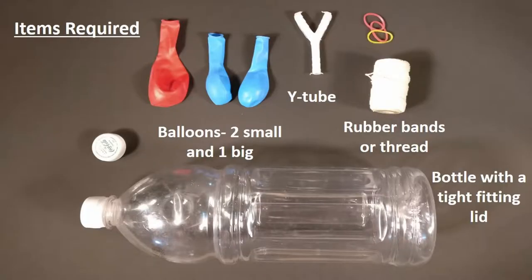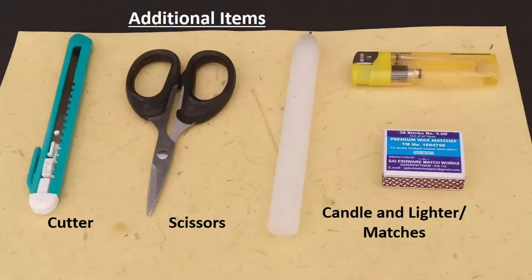For this experiment, we will require a big plastic bottle with a tight fitting lid, two small balloons, one large balloon, a Y-shaped tube and some rubber bands or thread. We will also require a cutter, a pair of scissors, a lighter and a candle and match box for building this model.